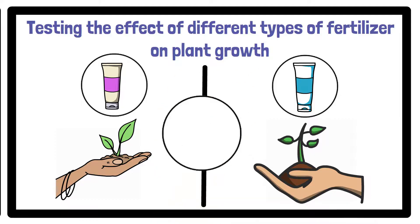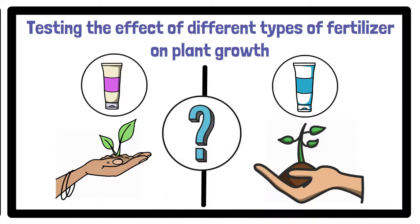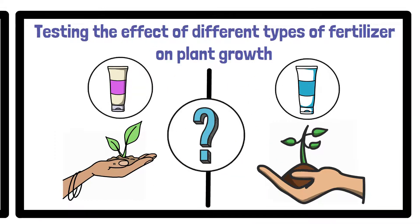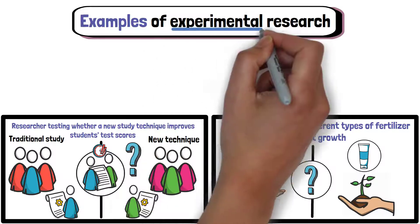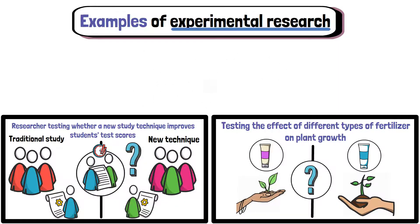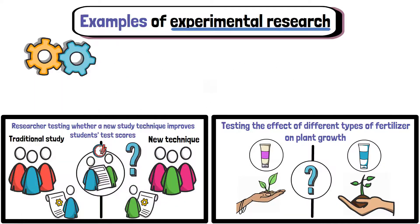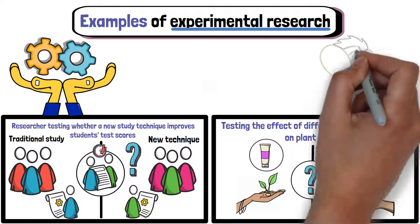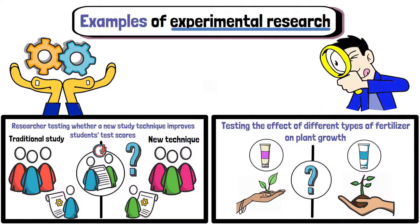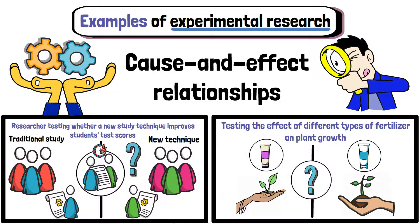the researcher can determine which fertiliser promotes the best growth. In both cases, experimental research is ideal because it isolates and manipulates variables in a controlled environment, allowing the researcher to observe direct cause and effect relationships.